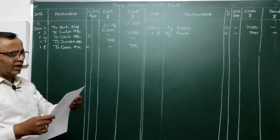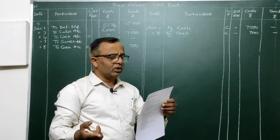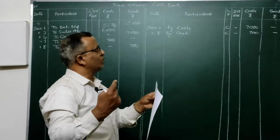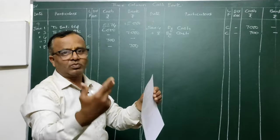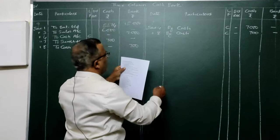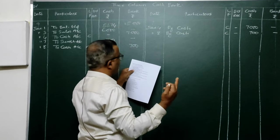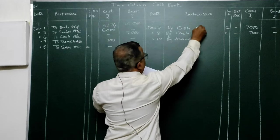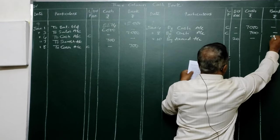On the 10th: paid to Anand by check 980, and discount allowed by him 20. Anand allowed the discount — from your business point of view, you received the discount. Whenever you pay money to a party, you receive discount; whenever you receive money, you allow discount. So discount allowed column is on debit side; discount received column is on credit side. You paid by check — entry: Anand Account Dr. Write 'By Anand' with 20 in discount column and 980 in bank column.